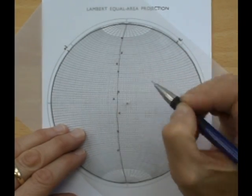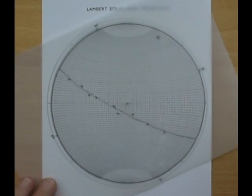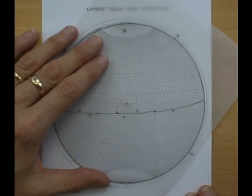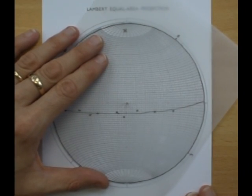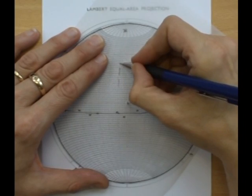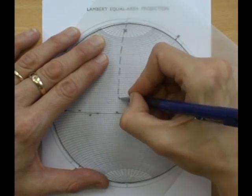So mark this on. And to find the actual plane we rotate this round to find the great circle that this point and the fold axis both lie on. Draw this in and this will be the actual plane of our fold.